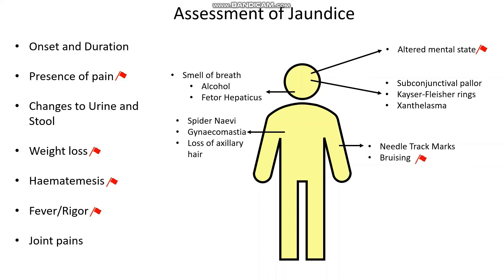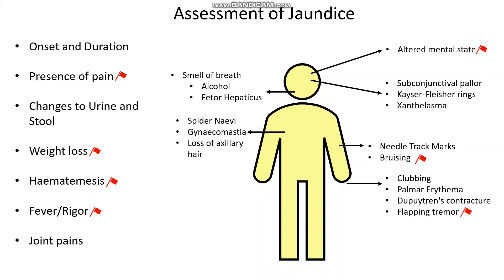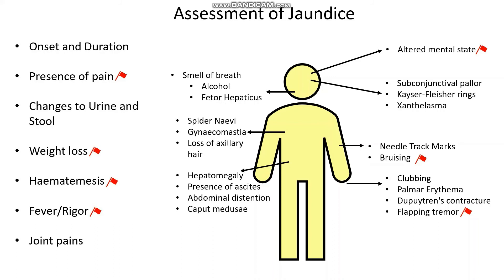Are they bruising spontaneously? This is very dangerous, as it means the liver can no longer produce the clotting factors it needs to produce. Do they have any clubbing, palmar erythema, or Dupuytren's contracture, as these point to chronic liver disease? Or a flapping tremor — again a red flag, pointing towards hepatic encephalopathy. Over the abdomen, do they have hepatomegaly — a large, tender liver? Do they have any ascites or abdominal distension? Or even caput medusae — the distension of veins over the abdomen that looks like Medusa's head.